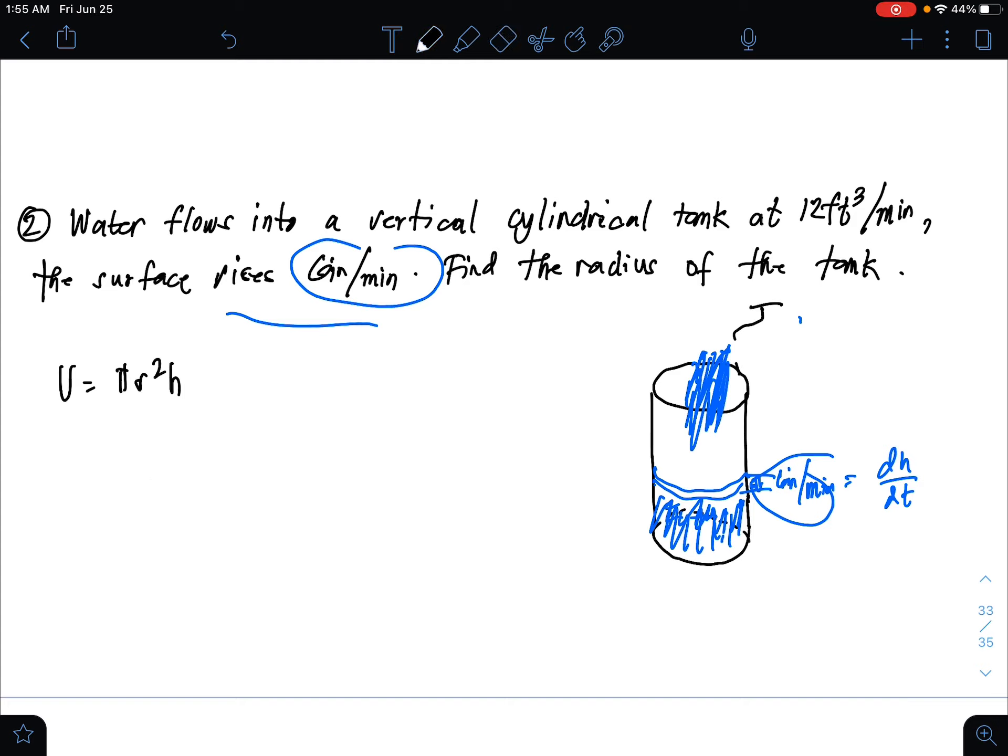We cannot substitute yet, let's try to derive. Differentiate with respect to time equals constant pi, then r squared, then the height. We need to derive it step by step, with respect to time.